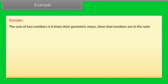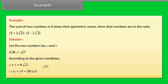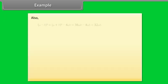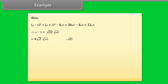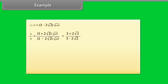Example: The sum of two numbers is 6 times their geometric mean. Show that the numbers are in a given ratio. Let the two numbers be A and B, with geometric mean √(AB). Given: A + B = 6√(AB) — equation 1. Squaring: (A+B)² = 36AB. Also, (A-B)² can be written as (A+B)² - 4AB = 36AB - 4AB = 32AB, so A - B = 4√2 × √(AB) — equation 2. Adding equations 1 and 2 and substituting, we obtain A/B = (3 + 2√2) / (3 - 2√2).